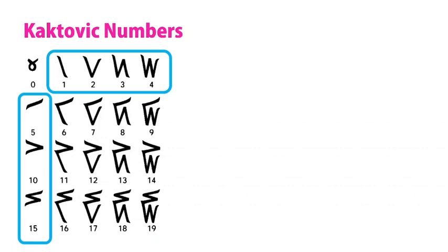Let's start with addition. When you add 2 and 2 in Arabic numerals, the 2s look nothing like the 4. But in Kaktovic numerals, these two parts look just like the sum.